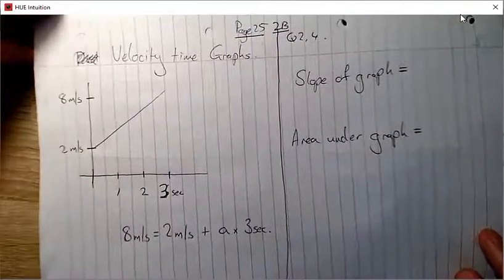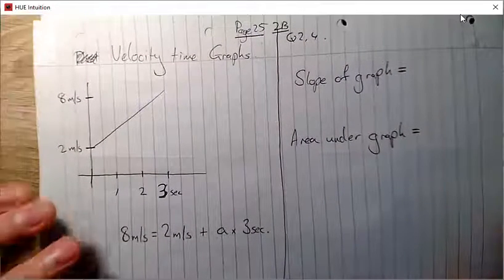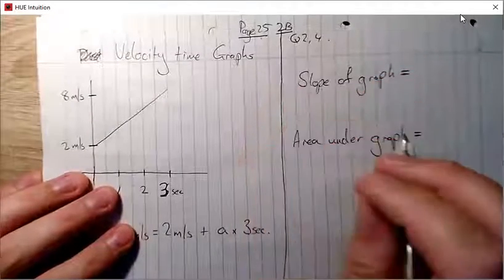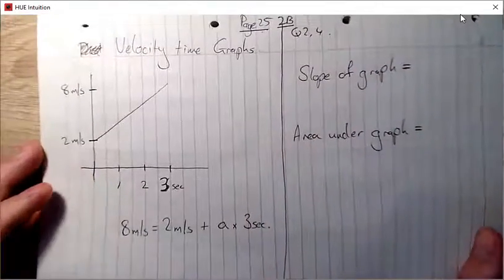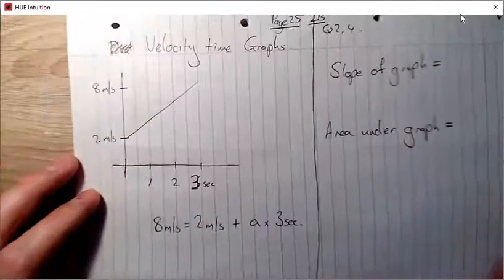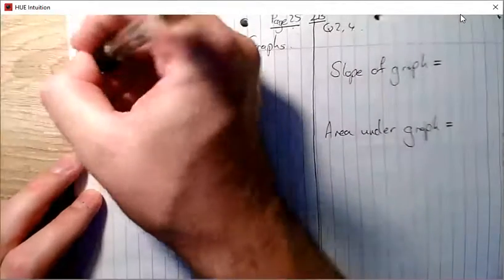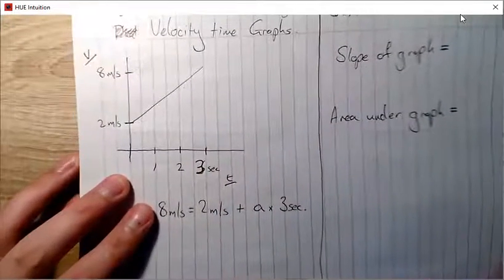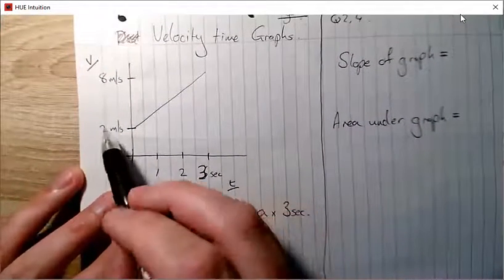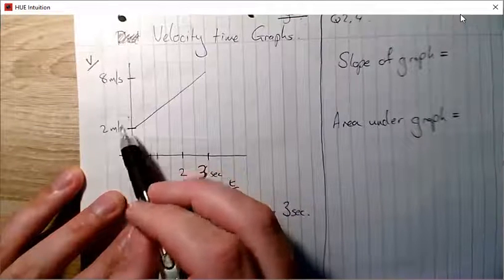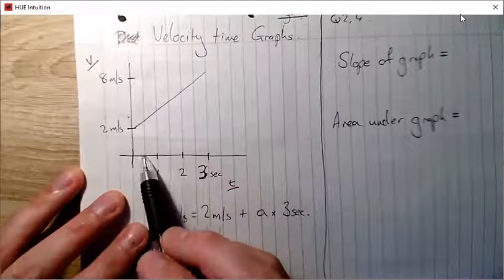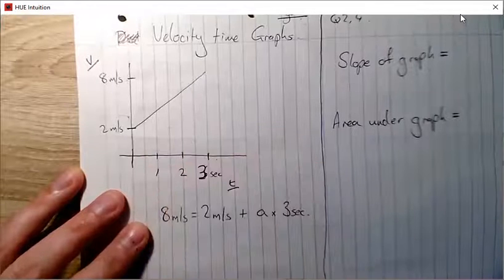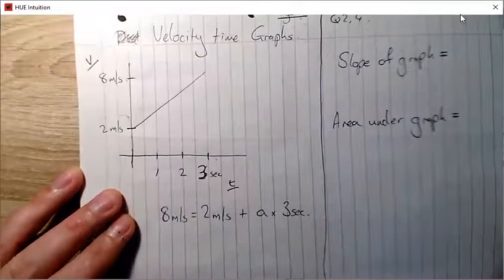We're looking at velocity-time graphs. If you're looking at Fundamental Applied Maths it's page 25, Exercise 2B, questions 2 and 4. A velocity-time graph has velocity on the y-axis and time on the x-axis. This one shows an object that starts moving at two meters per second and over three seconds accelerates up to eight meters per second.